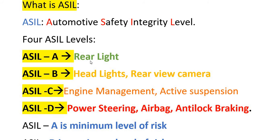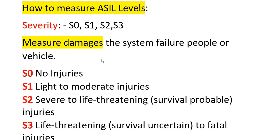ASIL levels are measured based on three parameters: severity, exposure, and controllability. Severity measures the impact of system failure on people or the vehicle, rated as S0 (no injuries), S1 (light to moderate injuries), S2 (severe to life-threatening but survivable), and S3 (life-threatening to fatal injuries).